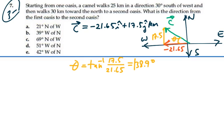Now, how do I define that angle? I have 38.9 degrees. If I were to look west first, and then went 38.9 degrees north of it, I would have my vector C. So this is truly 38.9 degrees north of west. But as I look at my possible answers, that answer is not there. I do not have 39 degrees north of west. There is 39 degrees west of north, but that's not the same.